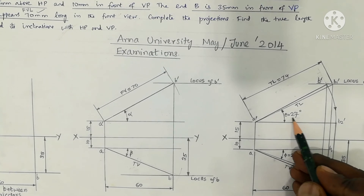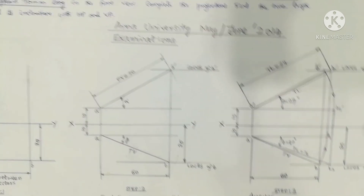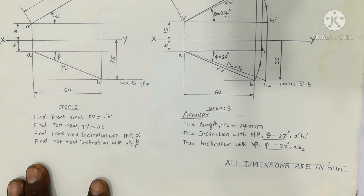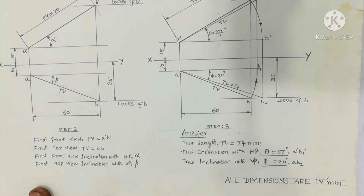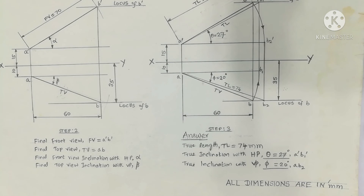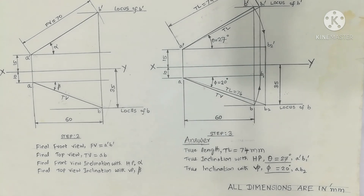Below your drawing, write 'All dimensions are in mm' because all distances used are in millimeters. The diagram appears like this — that is the purpose of this video. A link is given in the description box so you can understand the concept and how to draw the procedure.